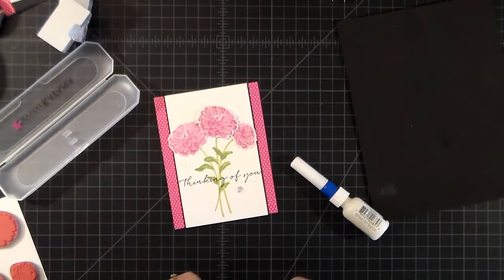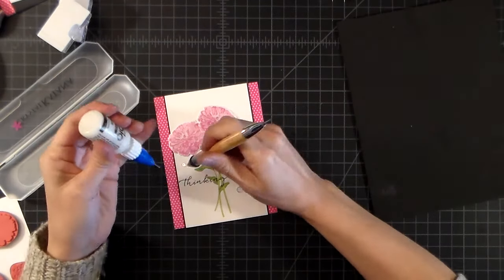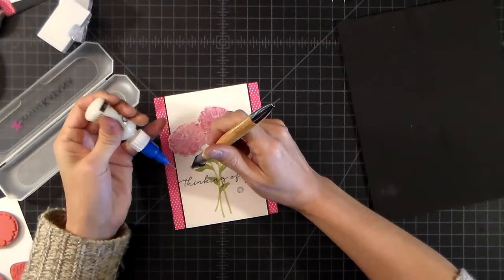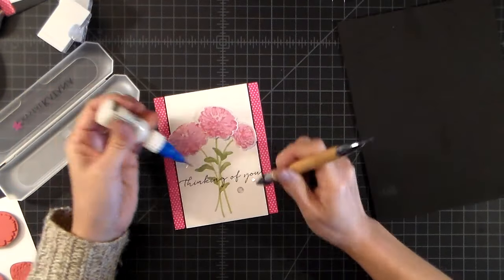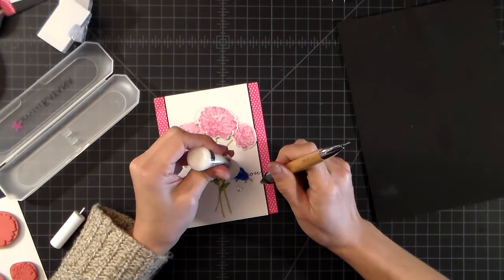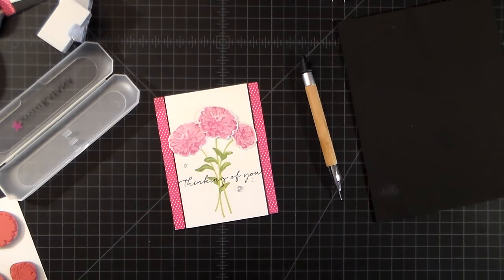Now I'm going to add a few sequins. It takes me a long time to figure out where to put sequins. And so I edited out the 20 minutes that it took me to figure out where to put three sequins. And I'm using my Crystal Katana to just position those with some multi-mat medium.